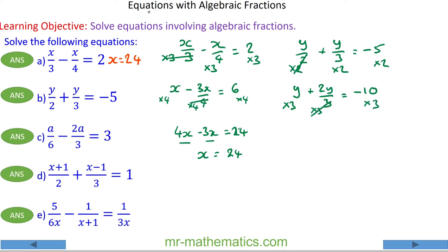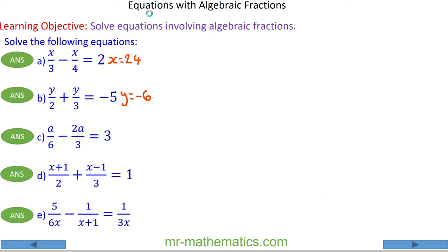And now I'm going to multiply every term by 3, so these will cancel which is 3y plus 2y will equal negative 30, and this will make 5y equals negative 30. So divide both by 5 and y will equal negative 6. And next for question c we have a over 6 minus 2a over 3 equals 3.